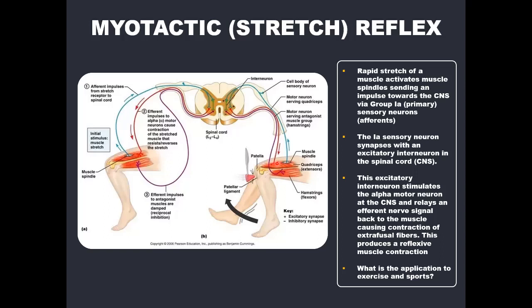This reflexive shortening contraction counteracts the rapid stretch of the quadriceps caused by the hammer tapping the patellar tendon. This mechanism is more active throughout the day than you may think. For example, when kicking a soccer ball as far as possible, you forcefully extend your knee and flex your hips, producing a rapid stretch of the hamstrings. The rapid stretch of the hamstrings and its intrafusal fibers would highly stimulate the group 1a afferents, resulting in a large afferent signal transmitted to the CNS.